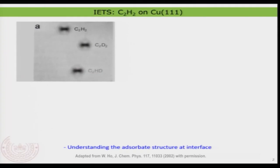Let me show you an STM image of a molecule absorbed on a copper 111 surface. The molecule is nothing but ethylene. The interesting thing is that in this image you already see some kind of a double or dumbbell-like structure on the surface — somewhat like two carbons attached to each other — but it is not very obvious what it really is.